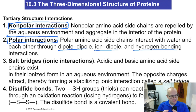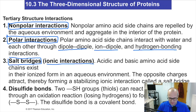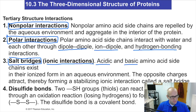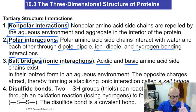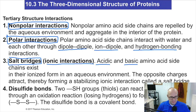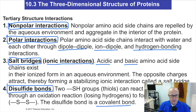Polar side chains can interact with other polar side chains or with the water in the environment. Salt bridges — also called ionic interactions — occur when you have acidic and basic amino acids. The acid reacts with the base to give a conjugate base (usually negative) and conjugate acid (usually positive), and they're attracted by an ionic interaction. Disulfide bonding is covalent — it's the only covalent interaction. The other interactions are all attractions, but the disulfide bond is literally a covalent bond and is very strong.